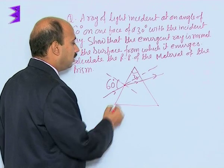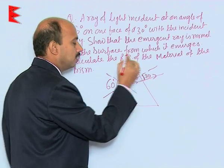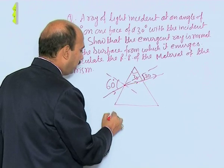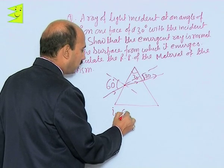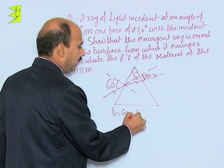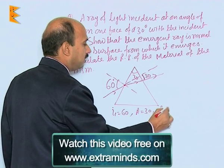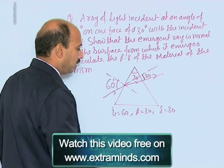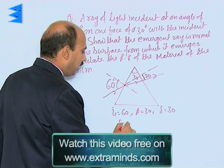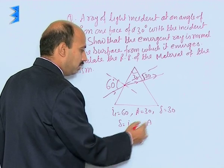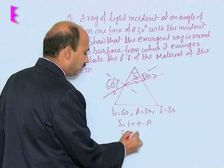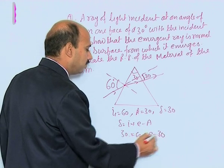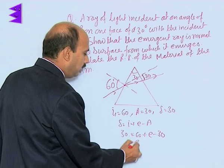The deviation we get is 30 degrees. So we can write: I₁ = 60, A = 30, and deviation = 30 degrees. Using the formula δ = i + e − A, we get 30 = 60 + E − 30, so E is equal to 0.